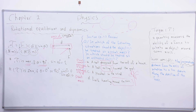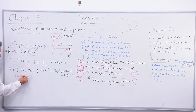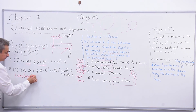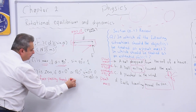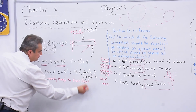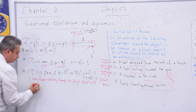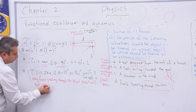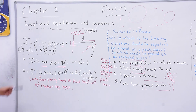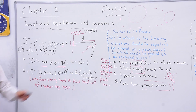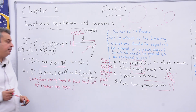From this we can write an important note: any force passing through the pivot point will not produce any torque. This is a multiple-choice question in the general exam: 'Which of the following forces will not produce any torque?' We pick the force passing through the axis of rotation or pivot point.